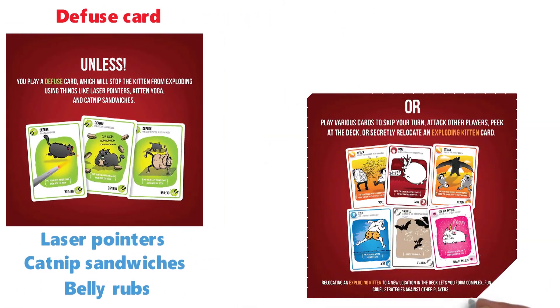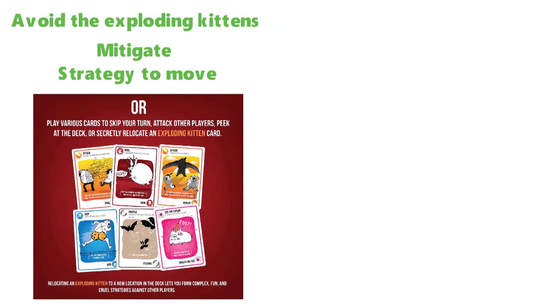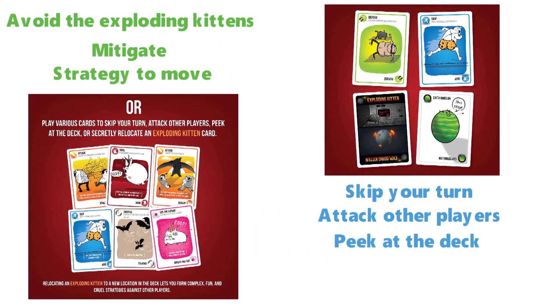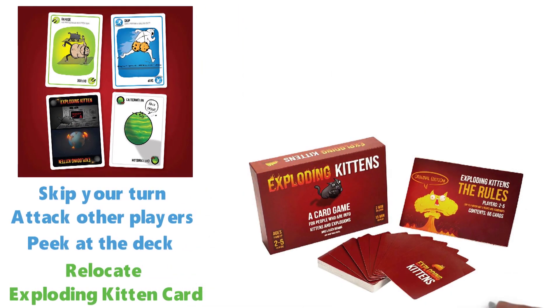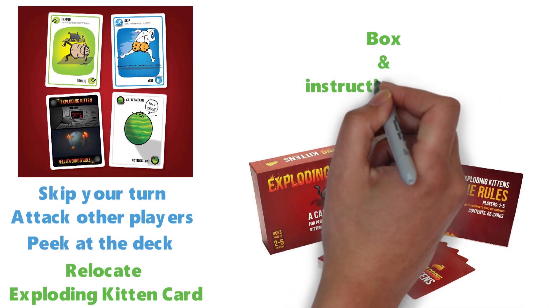All other cards in the deck are used for a strategy to move, mitigate, or avoid the exploding kittens. They serve to skip your turn, attack other players, peek at the deck, or secretly relocate an exploding kitten card. The package includes 56 cards, box, and instruction manual.